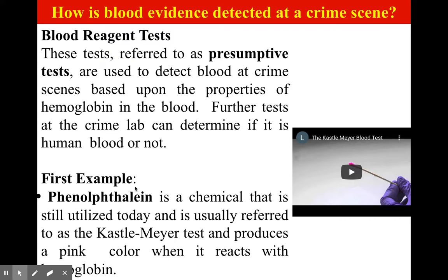The first example is phenolphthalein, a chemical that is still utilized today. It's usually referred to as the Kasselmeyer test and produces a pink color when it reacts with hemoglobin.